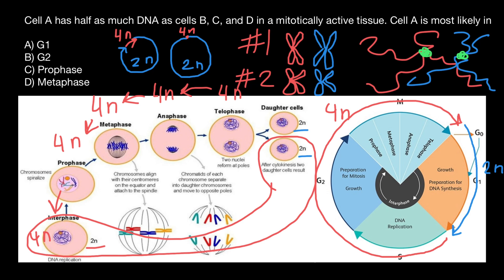Now let's return to our question. Cell A has half as much DNA as cells B, C, and D in mitotically active tissue. That means Cell A is most likely in only these two phases — G0 and G1. Since we have only one variant listed, the answer is G1 phase. In G1 phase our cells are diploid, while in all other stages — prophase, metaphase, and the rest — they are tetraploid.